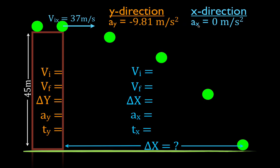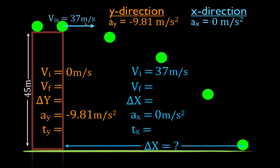We've already been told the acceleration in the x and the y-direction. The acceleration in the y-direction is minus 9.81 meters per second squared; x-direction is 0 meters per second squared. The initial velocity in the y-direction for freefall motion is 0 meters per second. We were told the initial velocity in the x-direction is 37 meters per second. Since there's no acceleration in x, velocity doesn't change, so the final velocity is also 37 meters per second. The change in position in the y-direction is minus 45 — it starts at height and moves down, which is the negative direction. We're looking for the change in position in the x-direction.